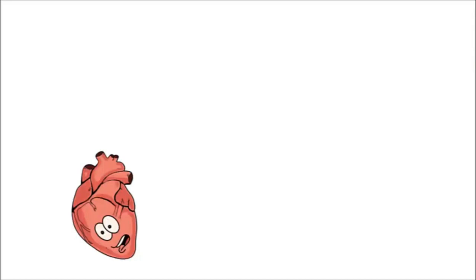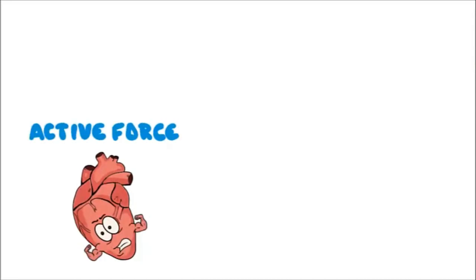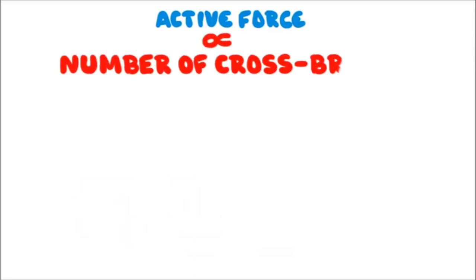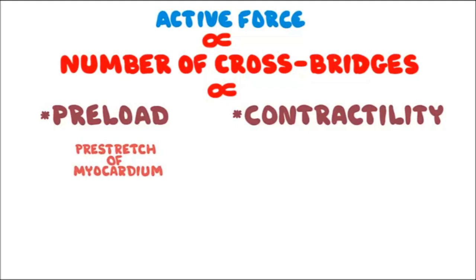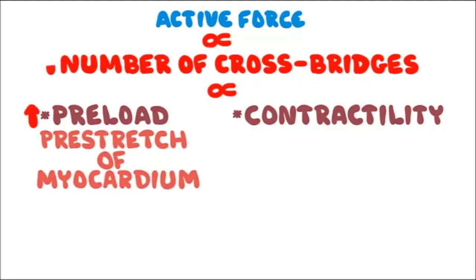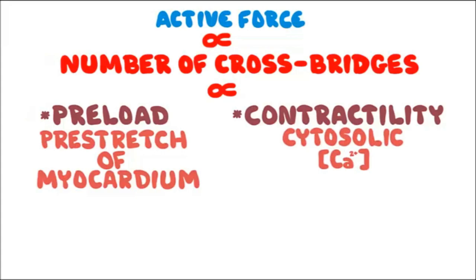In summary: when a heart muscle contracts, it generates an active force — an active tension. Stroke volume depends on the overall force of contraction, which is proportional to the number of cross bridges cycling — dependent on both preload and contractility. Preload is a pre-stretch of the myocardium; increased preload increases the number of cross bridges and the force of contraction. Contractility is a factor of cytosolic calcium concentration; increased cytosolic calcium increases contractility by increasing cross bridge number and the force of contraction.